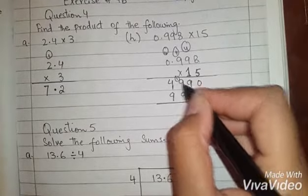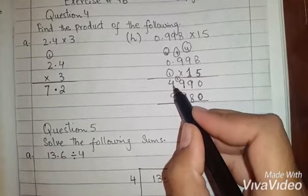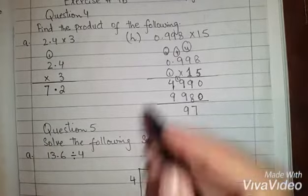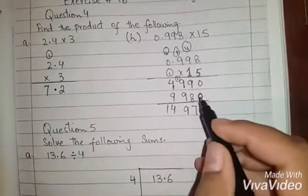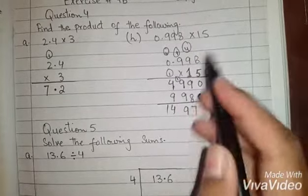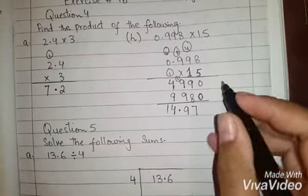8 multiply by 1 is 8, 1 plus 1 is 9, 9, 1 carry. 9 multiply by 1 is 9, 4 plus 5 is 13, 1 carry plus 1 is 14. Students, where is the point? Here we will put a point here. 14.97 is the answer.